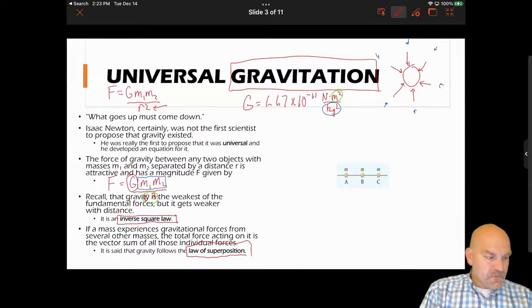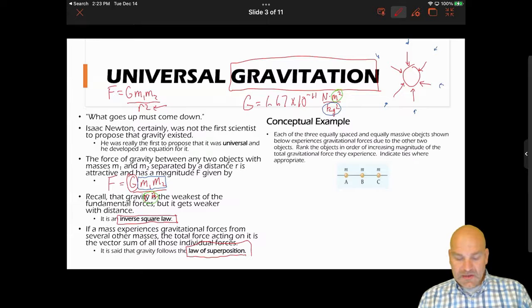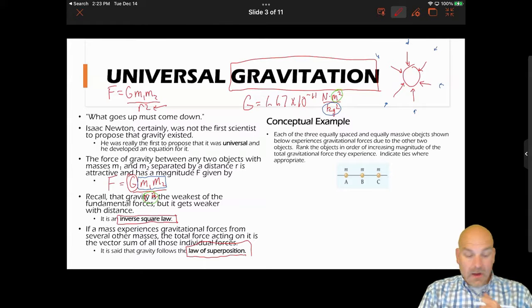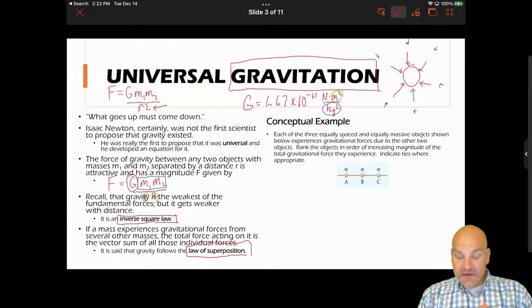Here's a quick conceptual example. It says, each of the three equally spaced and equally massive objects shown below experiences gravitational forces due to the other two objects. Rank the objects in order of increasing magnitude of the total gravitational force experienced, and indicate ties where appropriate.